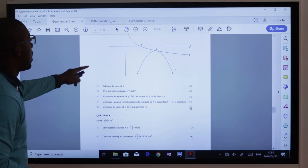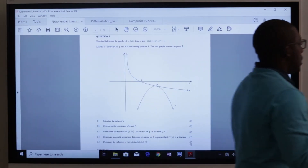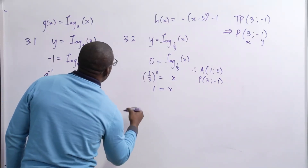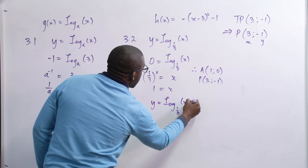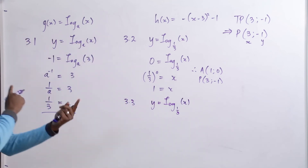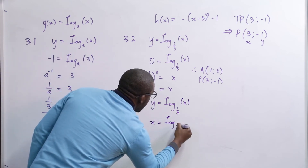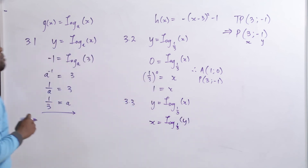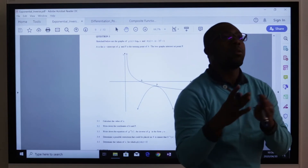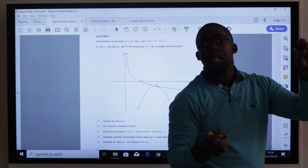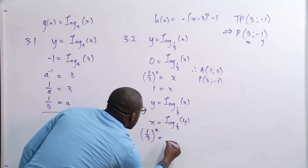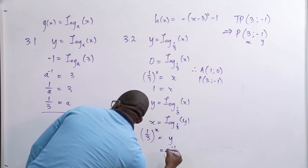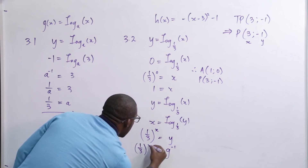Question 3.3: write down the equation of G⁻¹. Starting with Y equals log to the base of 1 third of X, the first step of finding an inverse is interchanging X and Y — reflecting in the line Y equals X. This gives X equals log to the base of 1 third of Y. Converting to exponential notation: 1 third to the exponent X equals Y. So G⁻¹ equals (1 third) to the X.